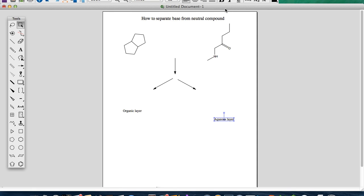Hi guys, previously we learned how to separate acid from neutral compound. Today we're going to learn how to separate base from neutral compound. Here we have two organic compounds: this part is the neutral compound, this one is the basic compound because there's an amine group here which is basic.